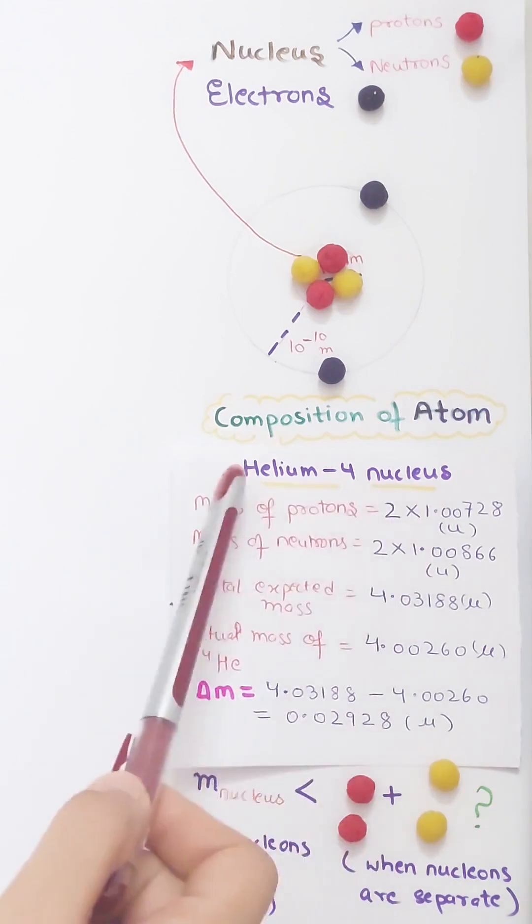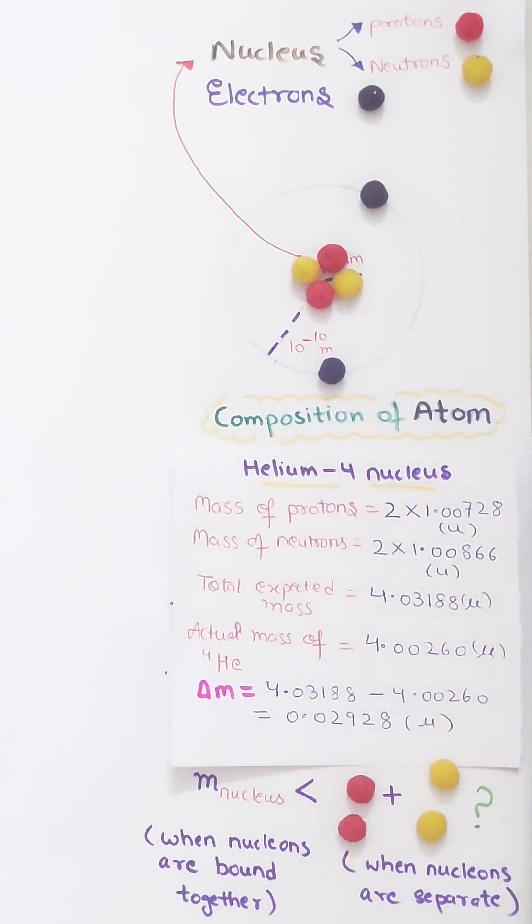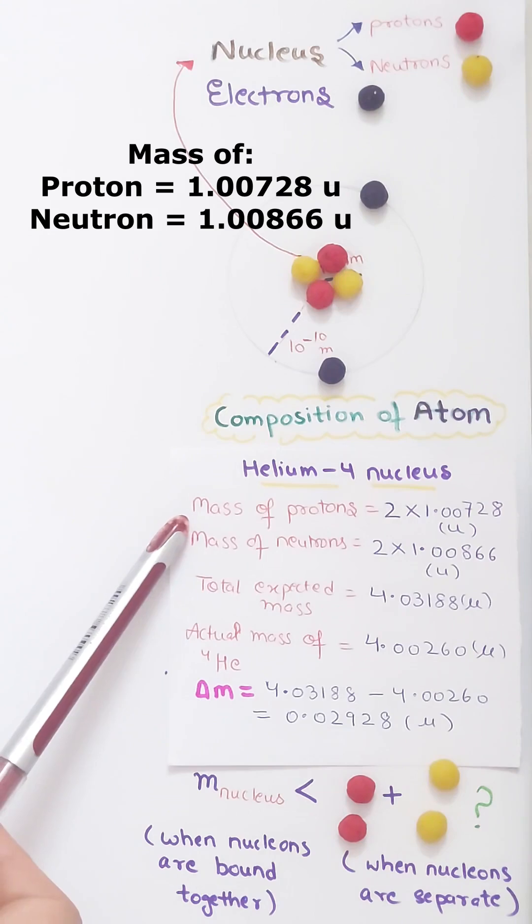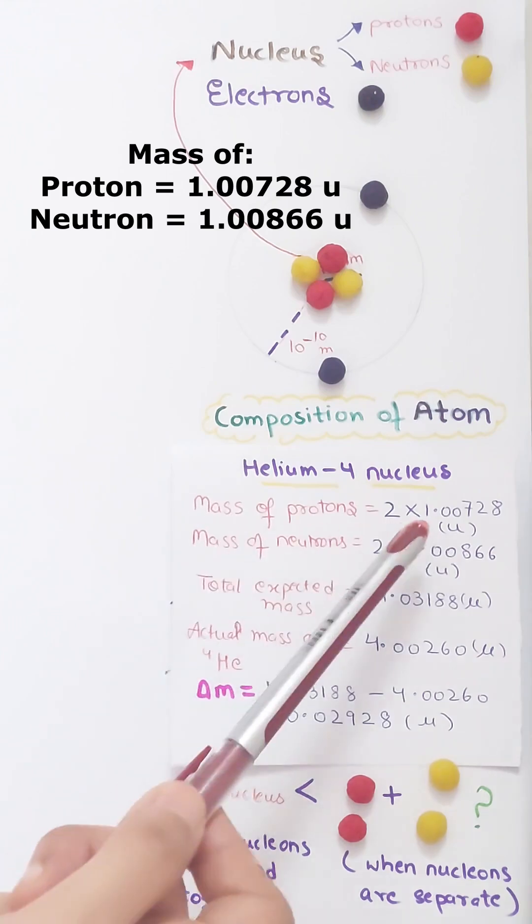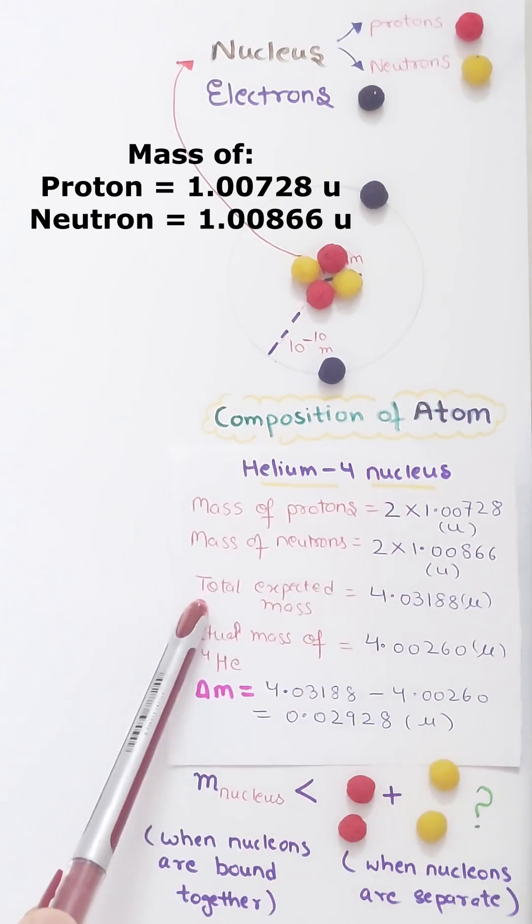So in a helium nucleus, we have two protons and two neutrons. So multiplying the masses of protons and neutrons with their respective numbers in a particular nucleus and by adding the two masses, we obtain the total expected mass.